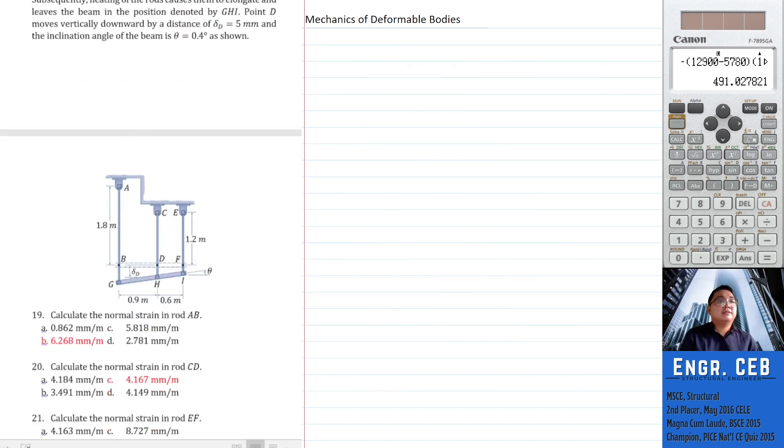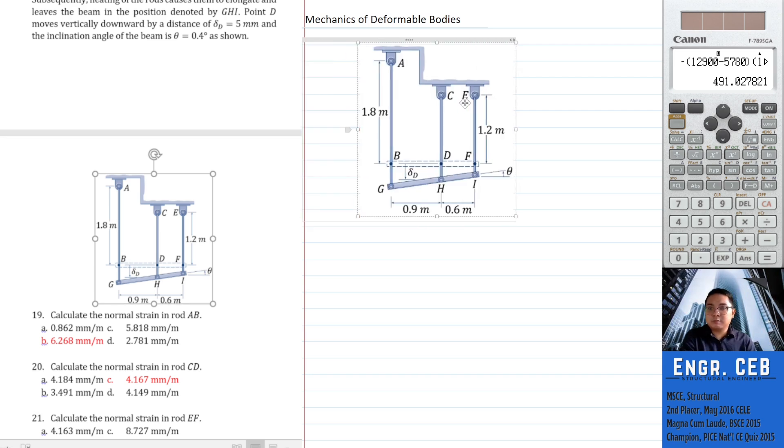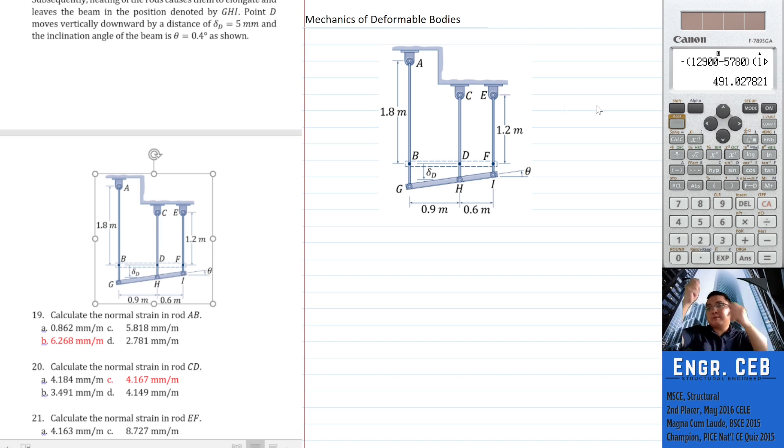Three vertical rods are all strain-free when they are initially pinned to a straight, rigid, horizontal beam BF. Subsequently, heating of the rods causes them to elongate and leaves the beam in the position denoted by GHI. So the bars elongated due to thermal expansion. When temperature increases in steel bars or any bars, they elongate by a certain amount. This is what happened when there was a temperature change. From horizontal, the bars moved down, so the position became GHI.